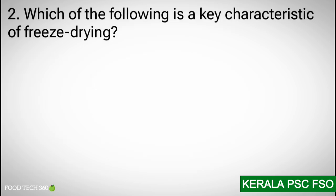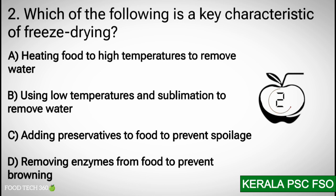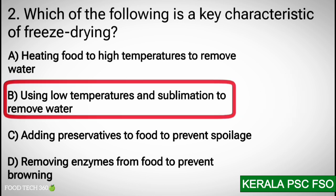Question number 2: Which of the following is a key characteristic of freeze drying? Options: A) Heating food to high temperature to remove water, B) Using low temperature and sublimation to remove water, C) Adding preservatives to food to prevent spoilage, D) Removing enzymes from food to prevent browning. Correct answer: B) Using low temperature and sublimation to remove water.